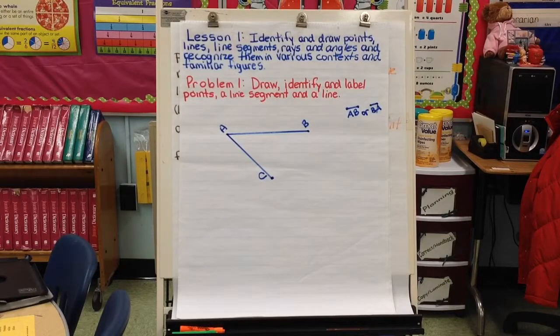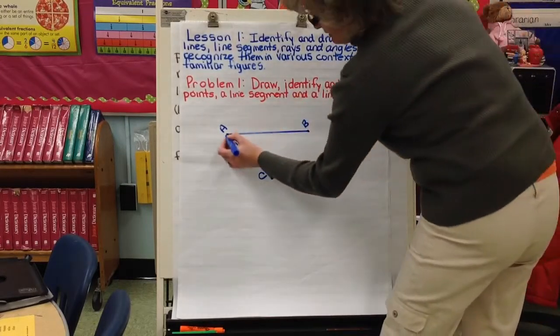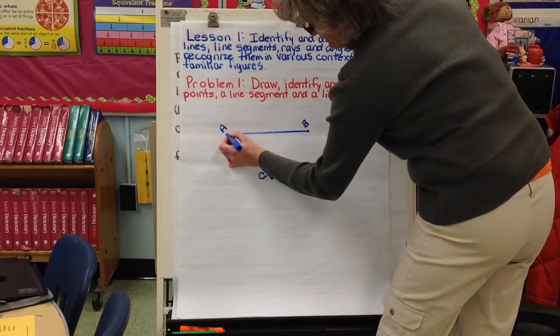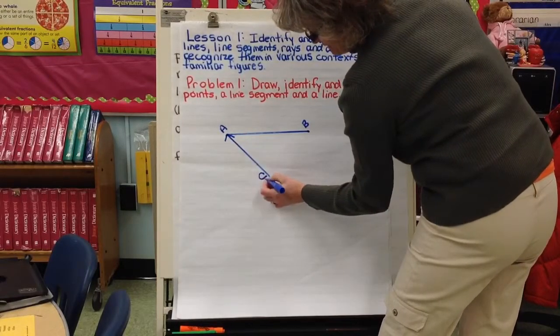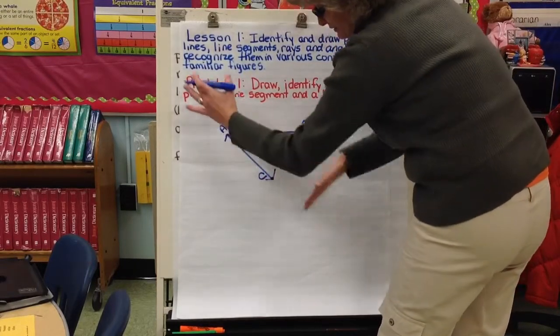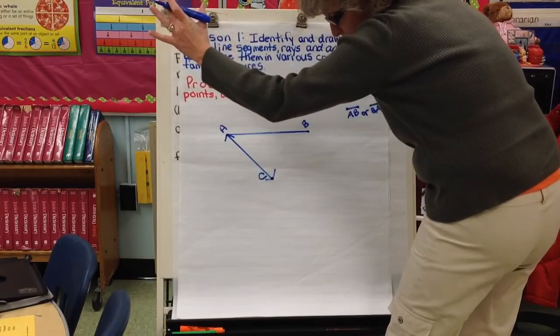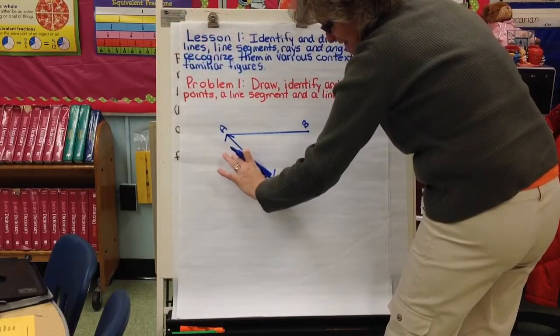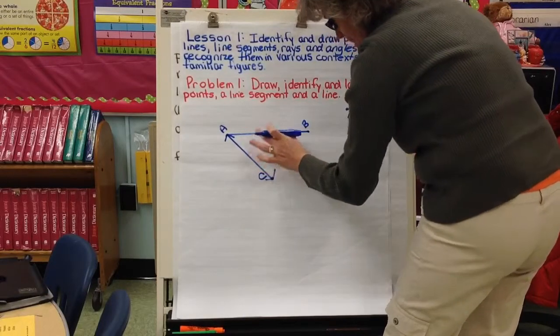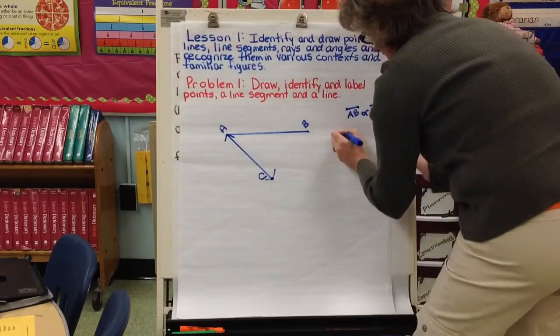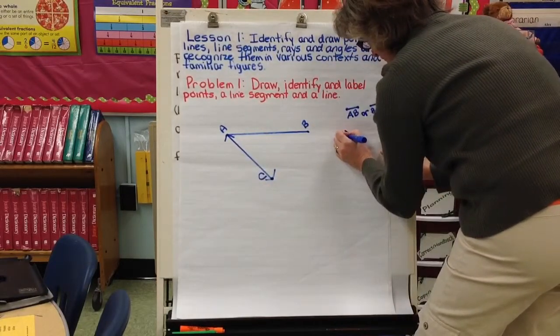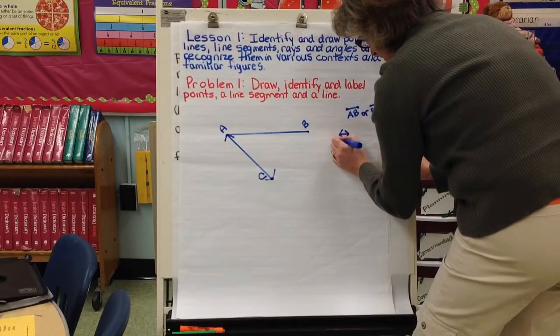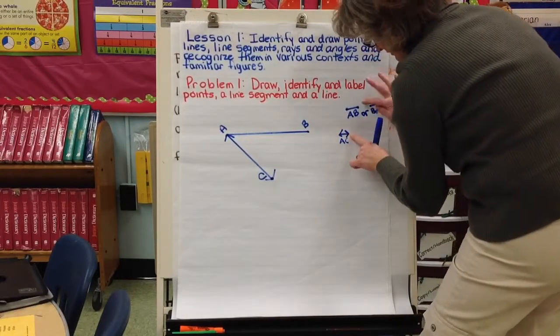Now, we're going to draw arrows. That means that this line extends forever in both directions. So, this is a line, this is a line segment. We could call this line A, C.